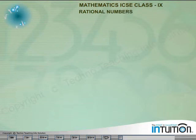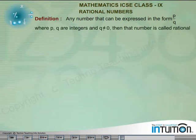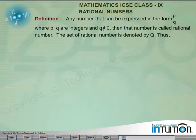Rational numbers. Definition: Any number that can be expressed in the form P by Q where P, Q are integers and Q is not equal to 0, then that number is called rational number.